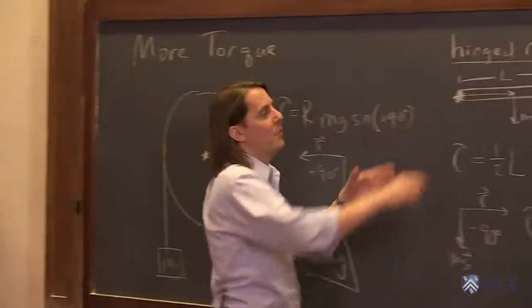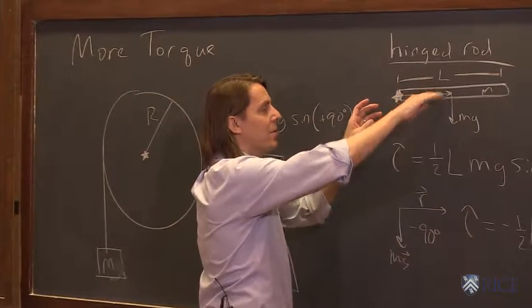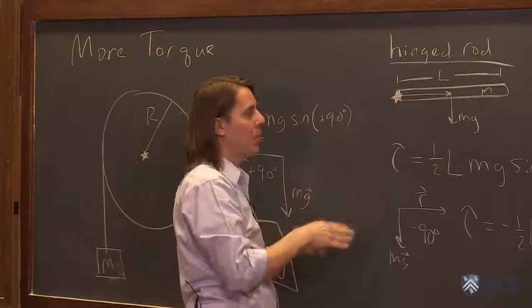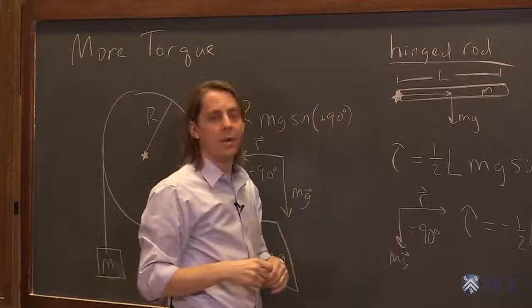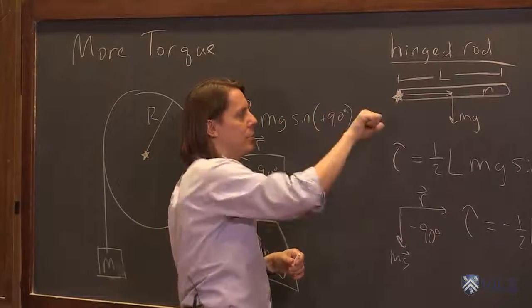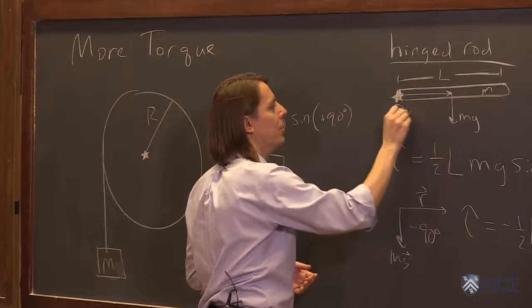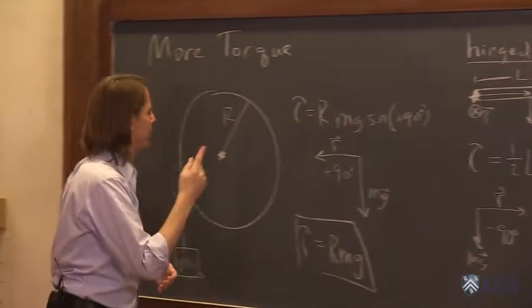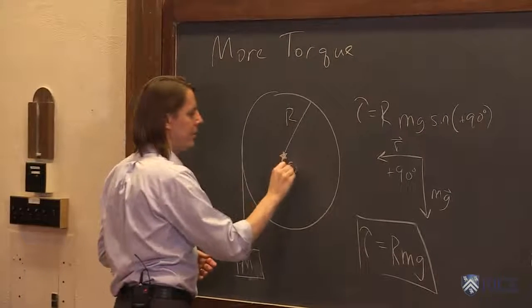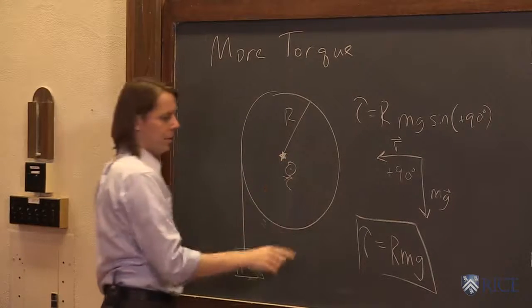And the minus just means, what kind of a motion would this tend to make? It would tend to make a clockwise motion. And we know clockwise motions, according to the right-hand rule, are where the torque is into the board. So I didn't draw my torque vector. Here it is, into the board. And if we come back over here, the torque vector is out of the board because it was positive.